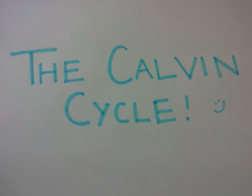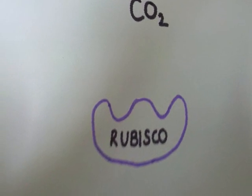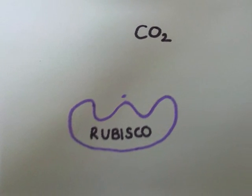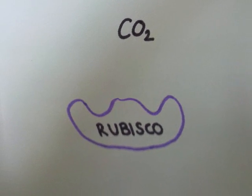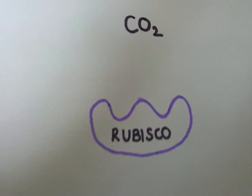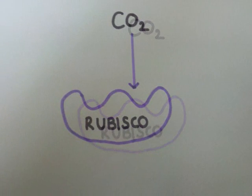This is the light-independent stage of photosynthesis, also known as the Calvin cycle. Carbon dioxide from the air diffuses into the leaf through open stomata, most of which are on the underside of the leaf. It then diffuses throughout the airspaces in the spongy mesophyll and reaches the palisade mesophyll layer, where it diffuses through the thin cellulose walls, the cell surface membrane, the cytoplasm, and the chloroplast envelope into the stroma.